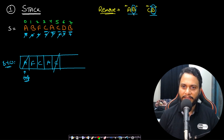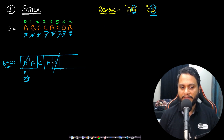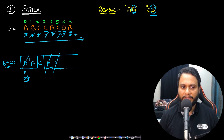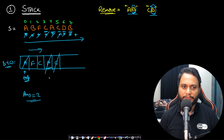Then we go to B. Can B be the second character? Yes, but the previous character must be A. I check the top of the stack — the previously available character is A. So I remove the top of the stack and ignore this B. Once the entire traversal is done, the size of the stack — which is 2 in this case — gives us the answer. So the answer is 2.